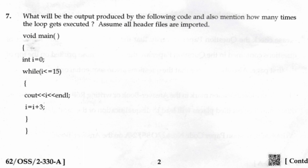Question 7: What will be the output produced by the following code and also mention how many times the loop gets executed? Assume all header files are included. void main() { int i = 0; while(i <= 15) { cout << i << endl; i = i + 3; } } Output: 0, 3, 6, 9, 12, 15. The loop gets executed 6 times.